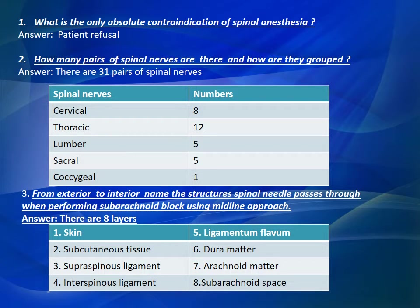Question Number 3: From exterior to interior, name the structures a spinal needle passes through when performing a subarachnoid block using the midline approach. There are 8 layers: 1. Skin, 2. Subcutaneous tissues, 3. Supraspinous ligament, 4. Interspinous ligament, 5. Ligamentum flavum, 6. Dura mater, 7. Arachnoid mater, 8. Subarachnoid space.